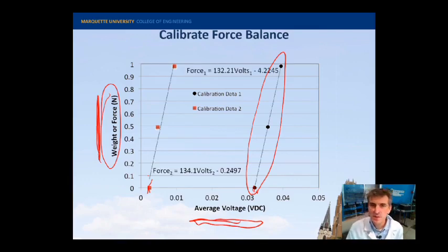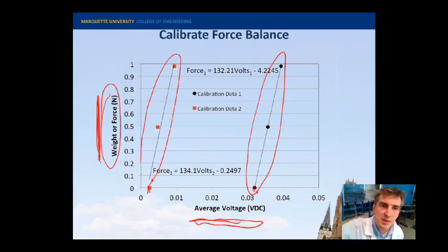I zeroed out the offset voltage by changing the balance and got a second set of data. I then curve fit this data and you can see that it's fairly linear over the range that we're interested in. From forces of zero to one newtons. We can use this data to convert the voltages that we collect when the ball is spinning to a force. This is how we get the data off of the force balance.